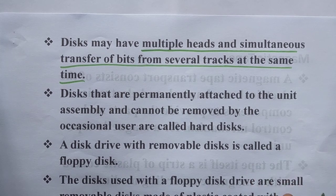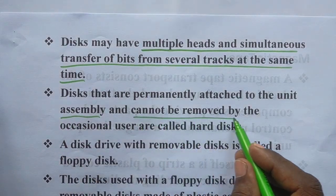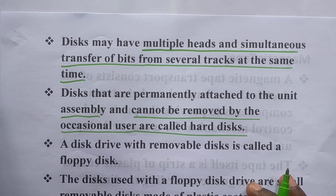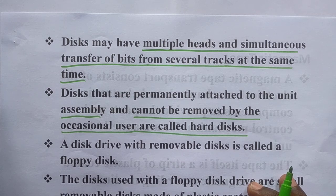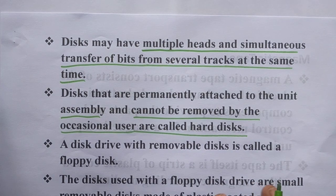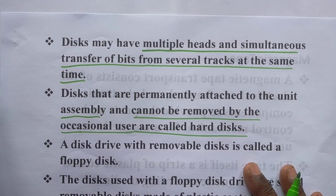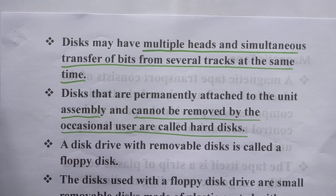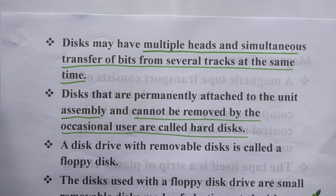Disks that are permanently attached to the unit assembly and cannot be removed by the occasional user are called hard disks. Once data is stored, it is permanently stored. If the disk is corrupted or damaged in some way, the data may not be available — but otherwise it is permanently stored.